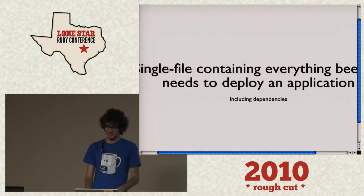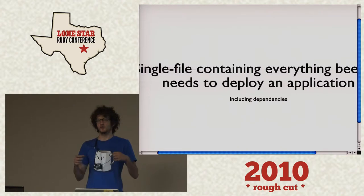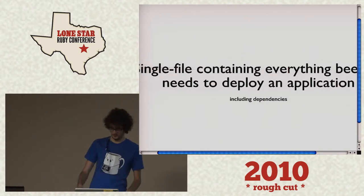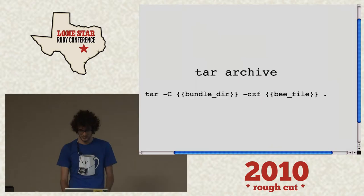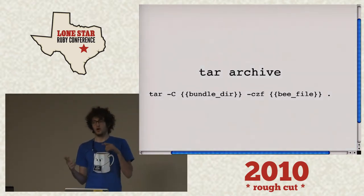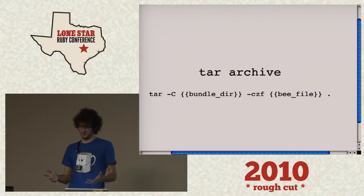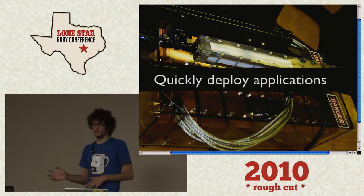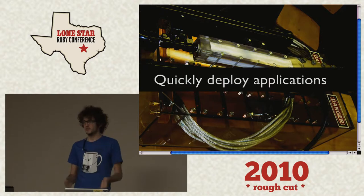So what exactly is a bee? A bee is a single file containing everything the application needs to run. This includes environments, and for rack apps and Ruby apps, gems — all the dependencies you need to run. Right now, baked in, it's a tar archive. Just imagine your app, you tar your app and compress it, taking out things you don't need. That's all a bee is. It's super easy to pass one file around rather than pass a bunch of files around.